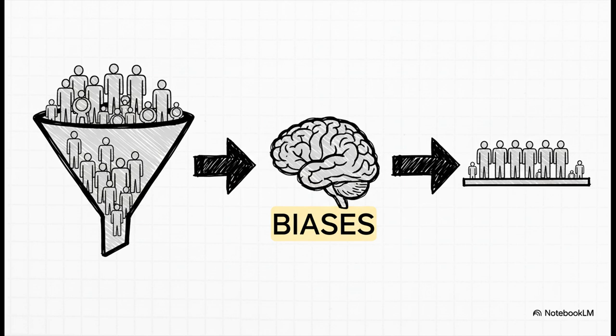Second, and this is a big one, a model is only as good as the data it's trained on. It's like a mirror. If the billions of articles and books it learned from contain human biases and stereotypes, then guess what? The AI is going to reflect those biases right back at us. It's the ultimate garbage in, garbage out problem.